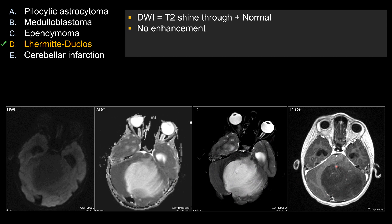On post-contrast sequence, Lhermitte-Duclos classically does not show any enhancement, or if it does, it tends to show only mild vascular enhancement. You should never see a discrete enhancing mass lesion or an enhancing mural nodule. If you see that, consider something else.